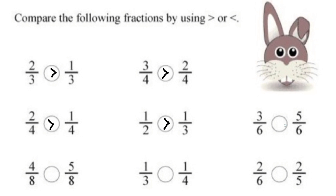This is how we compare fractions when the numerators are same. Now in the next question, 3 by 6 and 5 by 6 — again the denominators are same. So 3 by 6 is lesser than 5 by 6. Before comparing, we have to see whether the denominators are same or the numerators are same. In the next question, 4 by 8 and 5 by 8 — denominators are same, so 4 by 8 is lesser.